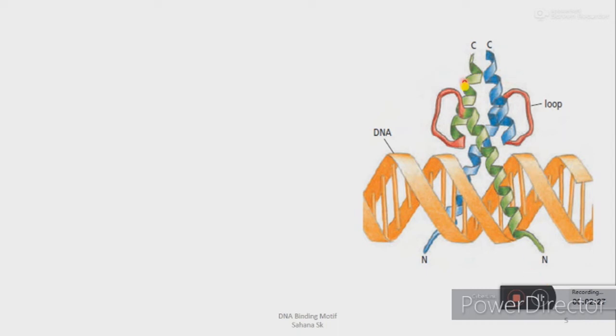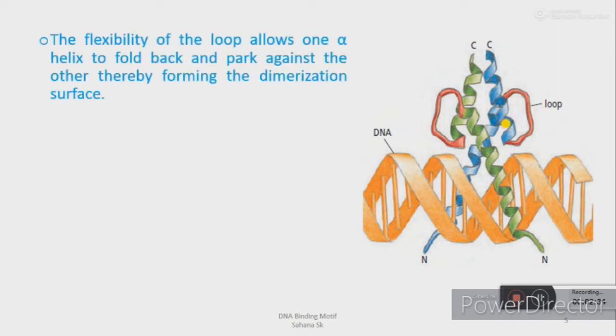Here in this diagram we can see there are two polypeptides, one is green and the other is blue. You might ask how the polypeptides dimerize. The answer is that the loop of this motif has some flexibility which allows one alpha-helix to fold back and park against the other, thereby forming a dimerization surface.